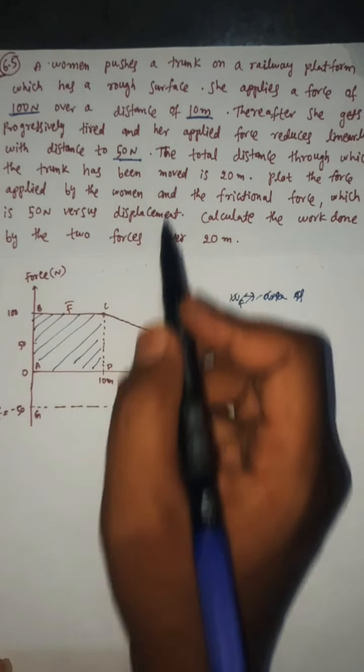Here it is 50 Newtons. The applied force is linearly decreased to 50 Newtons. The total distance through which the trunk has been moved is 20 meters.